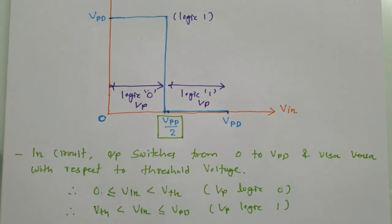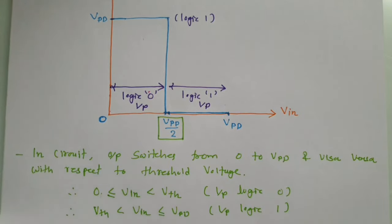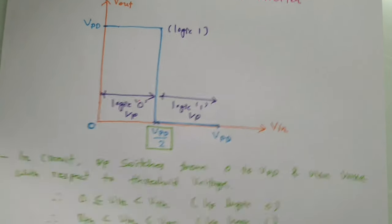This is what describes the ideal inverter. When we talk about a practical inverter, there are some small changes that happen in these characteristics. Let us try to understand that by looking at the circuit. First, I'll draw the circuit of the NMOS inverter.